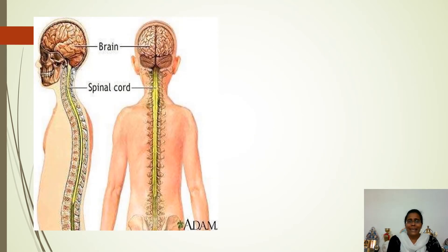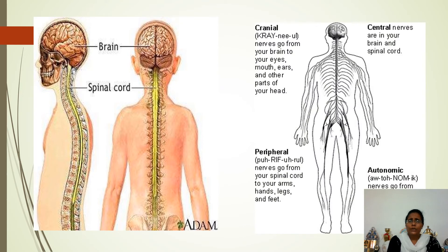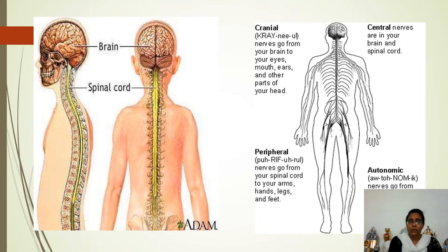Here is the external view of the brain and spinal cord with the nerves involved in the human body. You can see cranial nerves going from the brain to your eyes, mouth, ears, and other parts of your head; central nerves in your brain and spinal cord; peripheral nerves going from your spinal cord to your arms, hands, legs, and feet; and autonomic nerves going from your spine to the lower part of your body, such as the stomach.